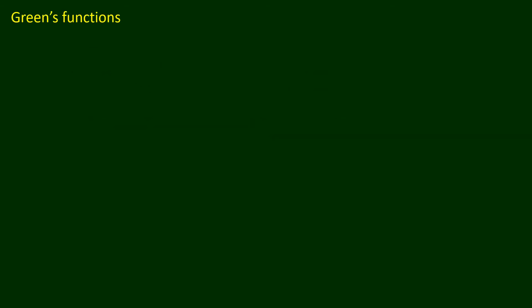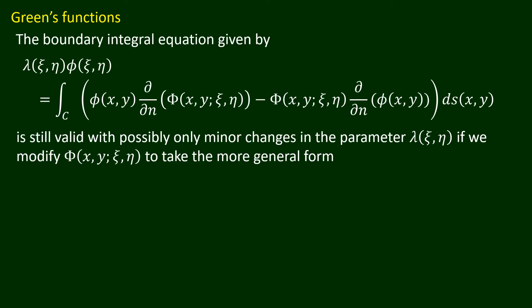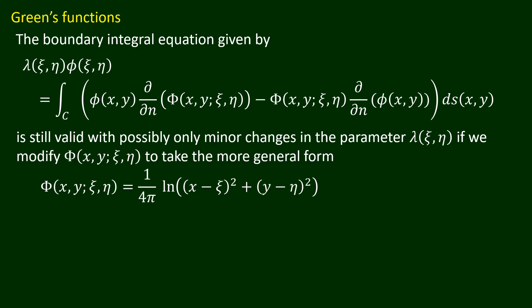The boundary integral equation for the two-dimensional Laplace's equation is still valid, with possibly only minor changes in the parameter lambda(xi, eta), if we modify the function capital Phi(x, y) to become capital Phi(x, y, xi, eta) = (1 over 4 pi) times the natural log of (x minus xi) squared plus (y minus eta) squared, plus capital Phi star(x, y, xi, eta).